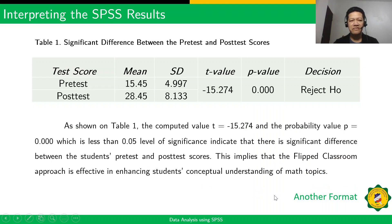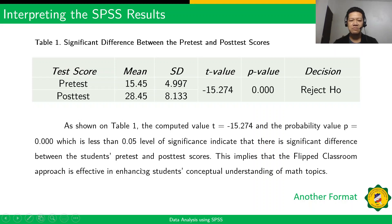For another format of interpreting the table: as shown in Table 1, the computed value T = -15.274 and the probability value P = 0.000, which is less than the 0.05 level of significance, indicating that there is a significant difference between the students' pre-test and post-test scores. This implies that the flipped classroom approach is effective in enhancing the students' conceptual understanding of math topics.